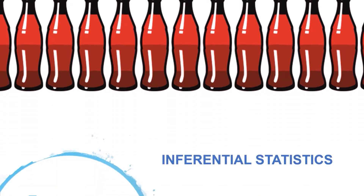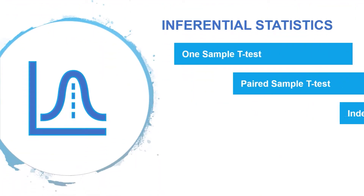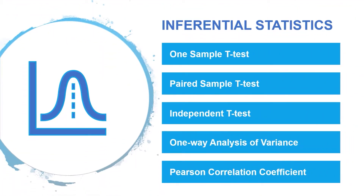We will be discussing some of the most commonly used inferential statistics in quantitative research: one-sample t-test, paired sample t-test, independent t-test, one-way analysis of variance, and Pearson correlation coefficient.